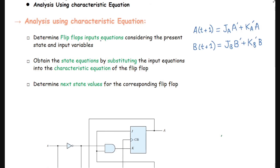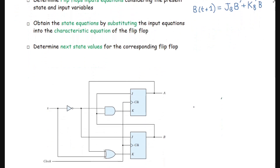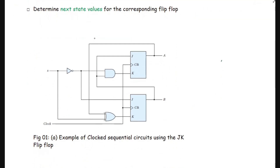The first step is to determine the flip-flop input equations considering the present state and input variables. This step is the same as covered in the last lecture. The input equations derived are: J_A = B, and K_A = B · x'.